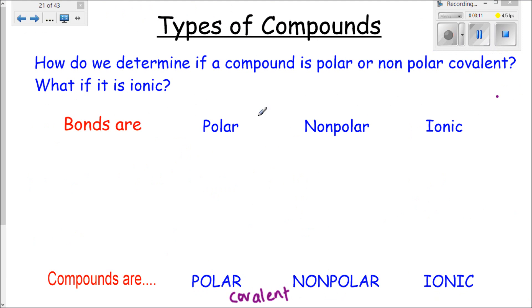We just learned that we can have bonds that are polar, nonpolar or ionic. Now, how do we determine if the compound itself is polar, nonpolar or ionic? First of all, if you have ionic bonds, that is automatically going to mean that you're an ionic compound. There's no other way that you can do it. If you have nonpolar bonds, you are also going to be a nonpolar molecule. You can't be a polar molecule.